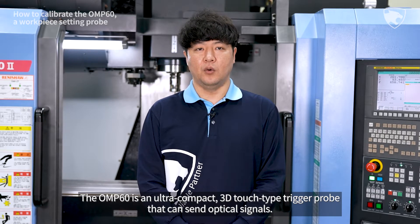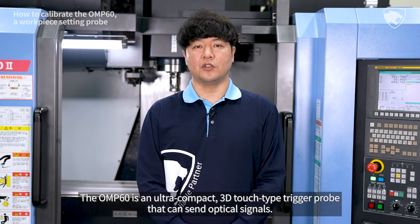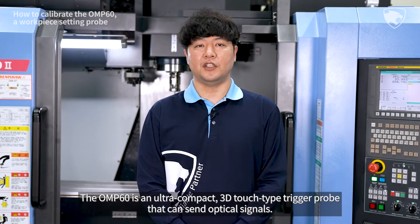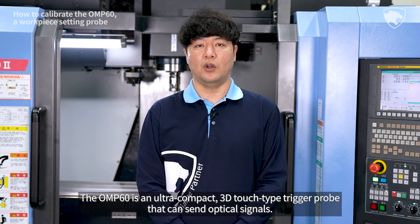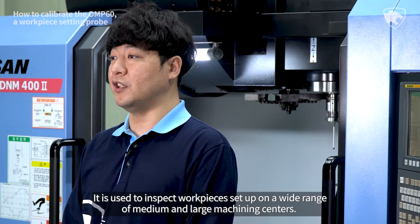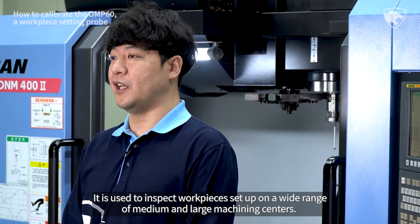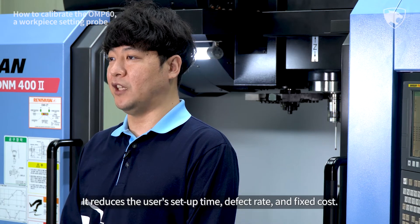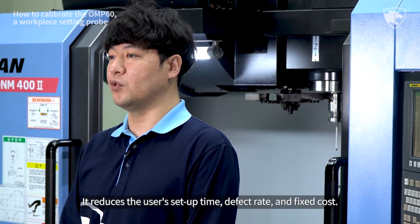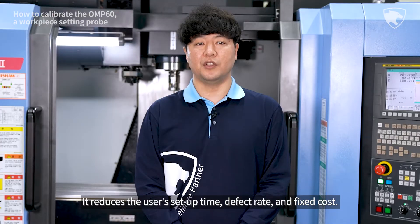The OMP60 is an ultra-compact 3D touch type trigger probe that can send optical signals. It is used to inspect workpieces set up on a wide range of medium and large machining centers. It reduces the user setup time, defect rate, and fixed cost.